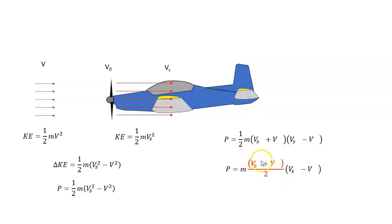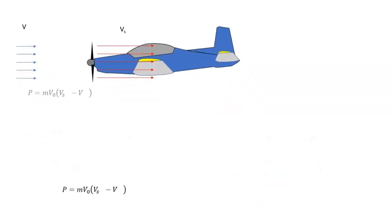this is the average velocity between V and Vs, which equals V₀. So the power is P = mV₀(Vs - V). I'm going to park that equation.